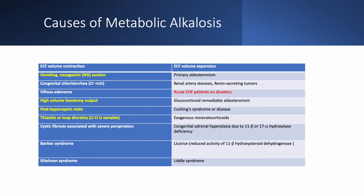Looking at the causes of metabolic alkalosis with volume contraction: the common causes — shown in yellow — are vomiting and nasogastric suction, high-volume ileostomy output, post-hypercapnic state alkalosis especially in the ICU, and use of thiazide or loop diuretics. These are very common and frequently cause metabolic alkalosis, especially if the patient is over-diuresed. Urine chloride is variable in the case of diuretics.